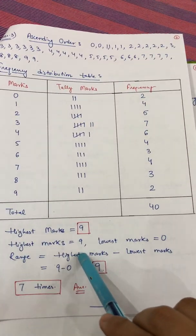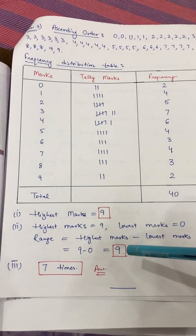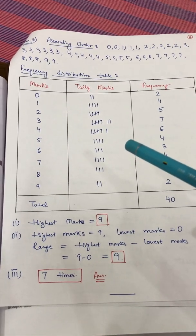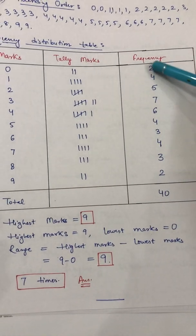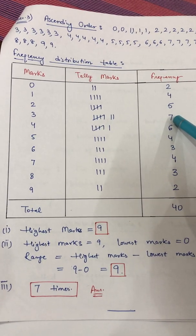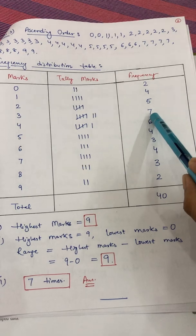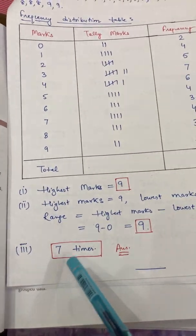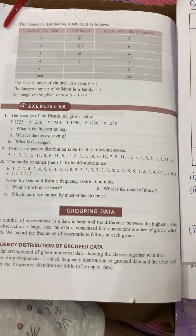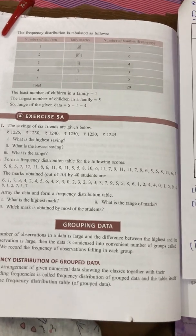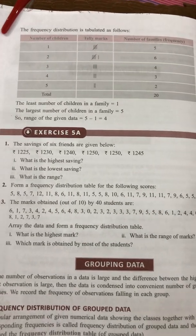The highest marks are 9 and the lowest marks are 0. The range is highest minus lowest, which is 9 minus 0, that is 9. For which marks most students scored: check the highest frequency, which is 7. Three marks is occurring 7 times, so that is the highest frequency. This completes Exercise 5a. Do these questions in your notebook and practice as well. Take care and bye!